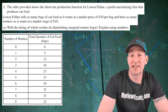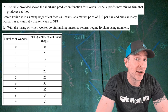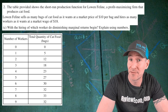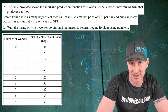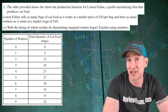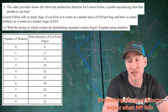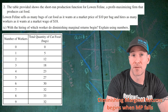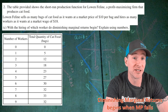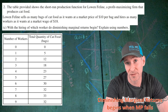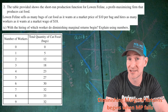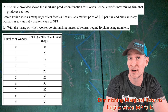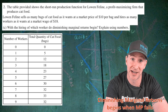For part C, we are asked with the hiring of which worker will diminishing returns set in, and we have to explain using numbers. Remember, diminishing marginal returns sets in as soon as marginal product begins to fall. Marginal product is the change in total product divided by the change in quantity. Since the quantity on our table only changes by one, we don't have to divide by anything.